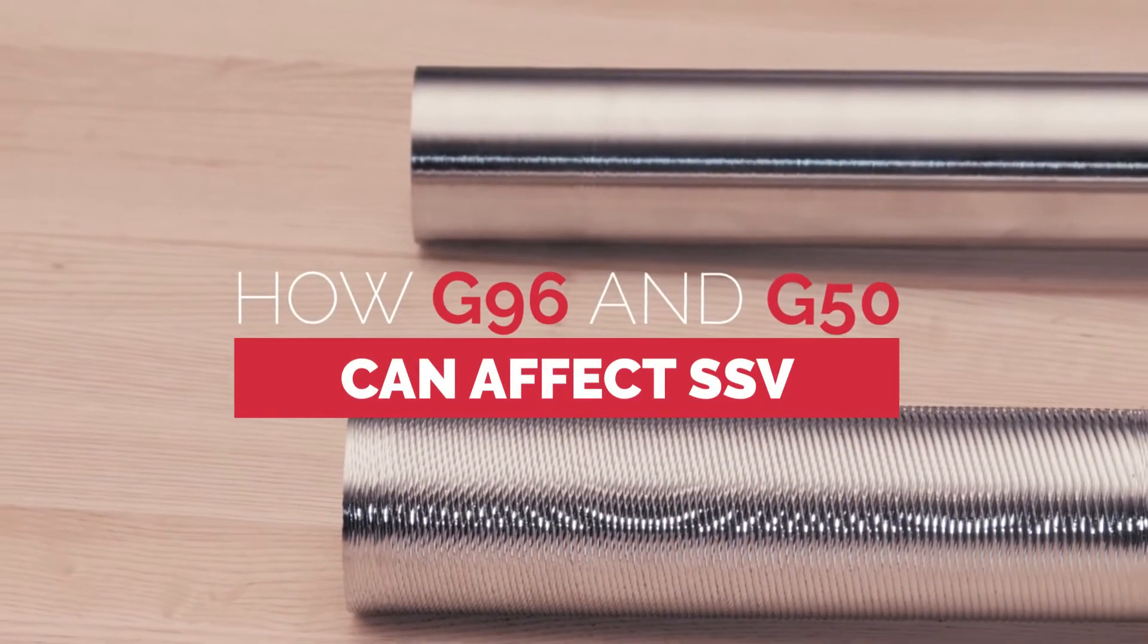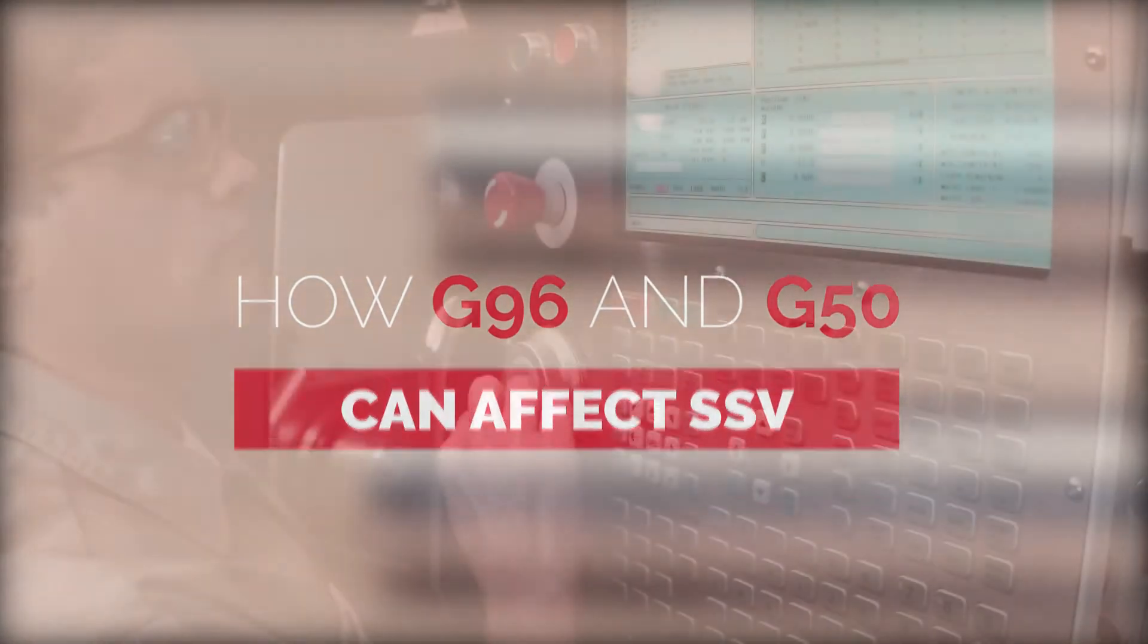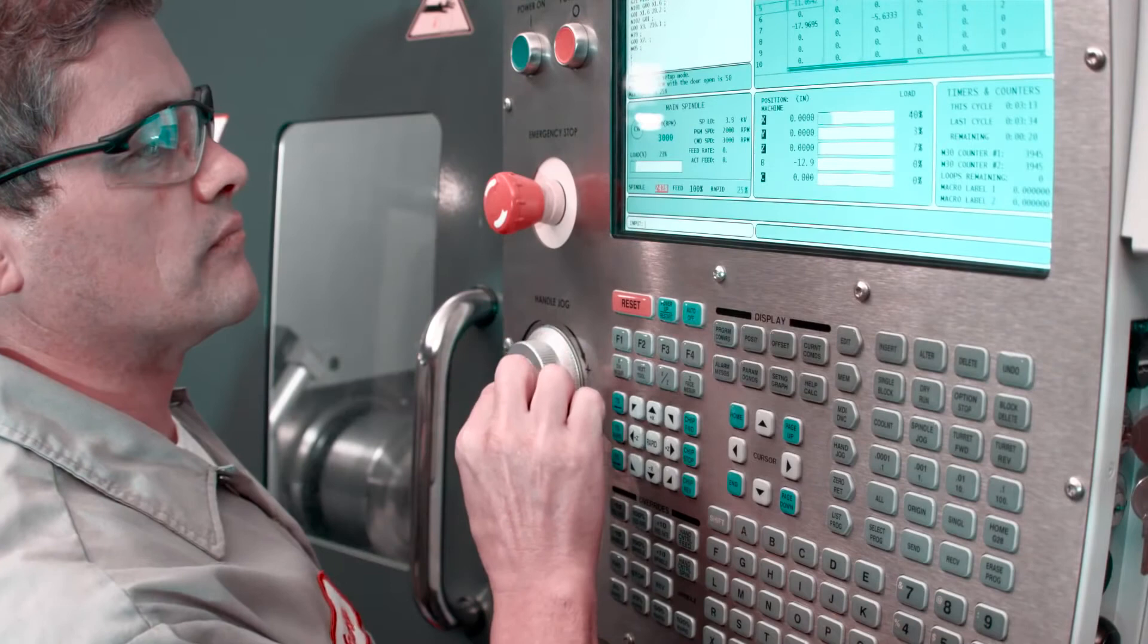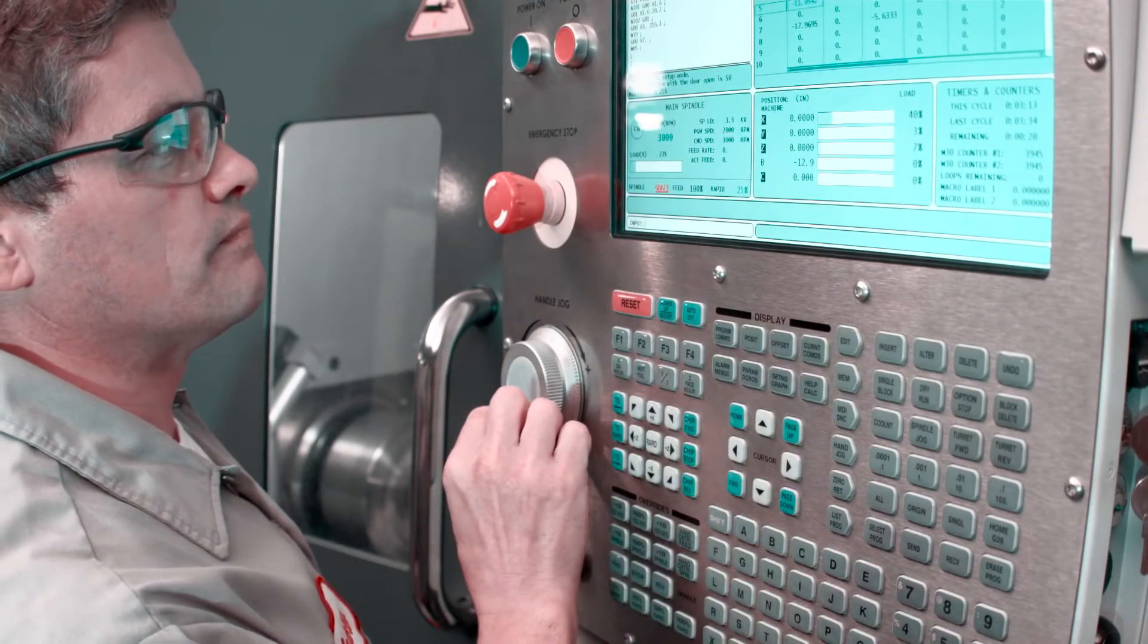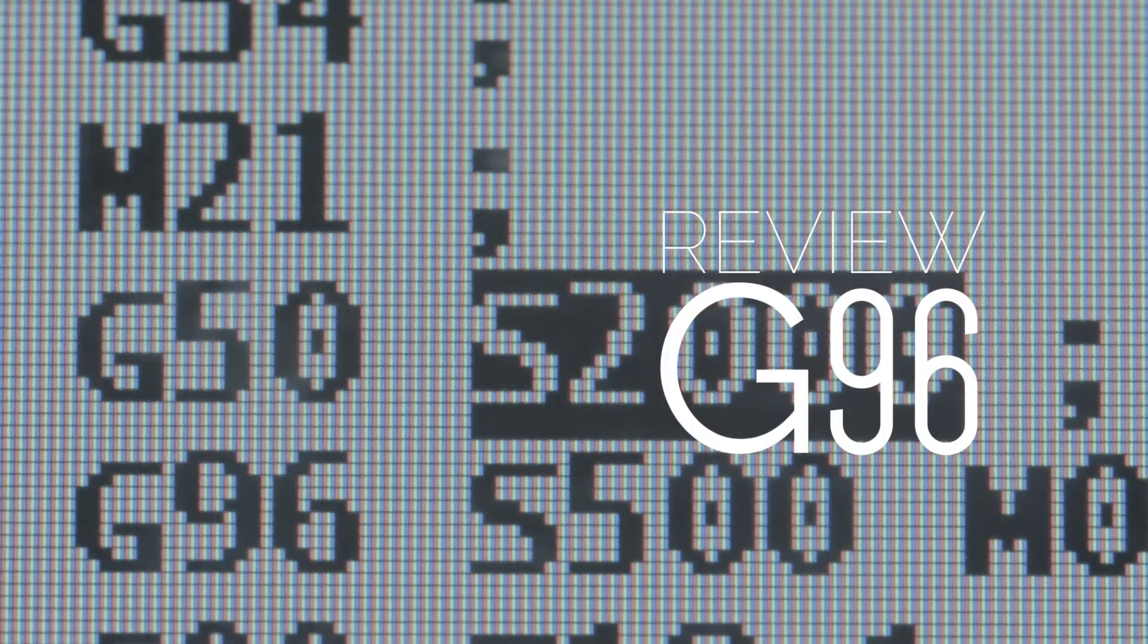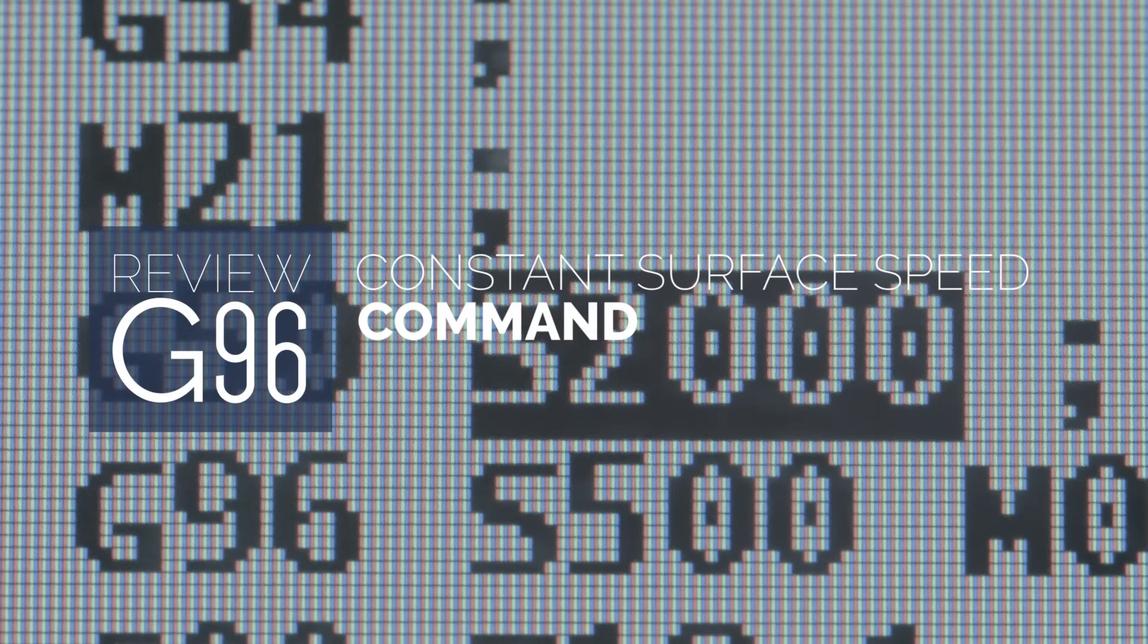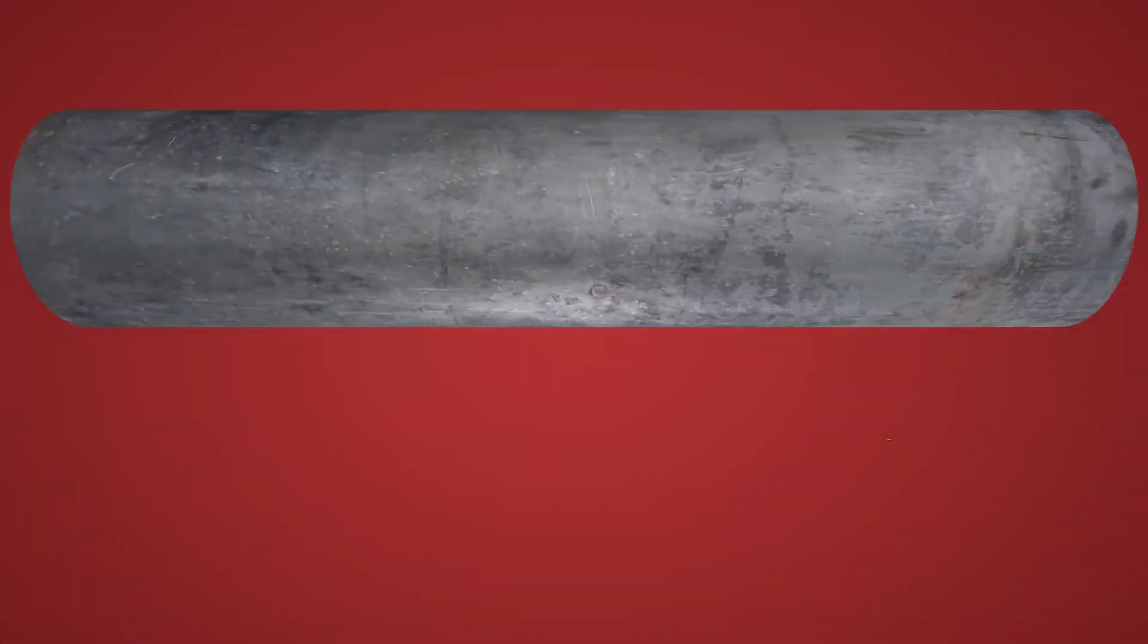Now we're going to take a quick look at G96 and G50. Two commonly used G codes that can interfere with the way SSV functions under certain circumstances. We'll start with G96, which is the constant surface speed command. To get a handle on G96, we need to understand the concept of surface footage.